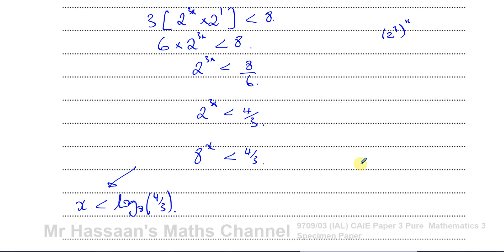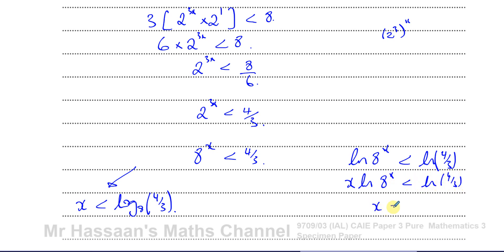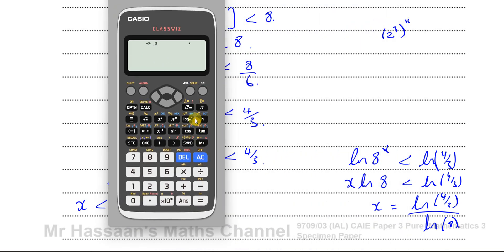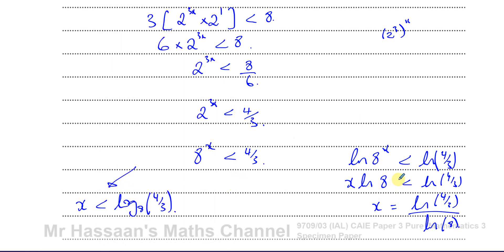We could also take ln of 8^x is less than ln of 4 over 3. Using the power law, x times ln 8 is less than ln of 4 over 3, so x is less than ln(4 over 3) divided by ln 8. Checking the decimal: ln(4 over 3) divided by ln 8 gives exactly the same answer, 0.1383. There are lots of different ways to solve such questions.